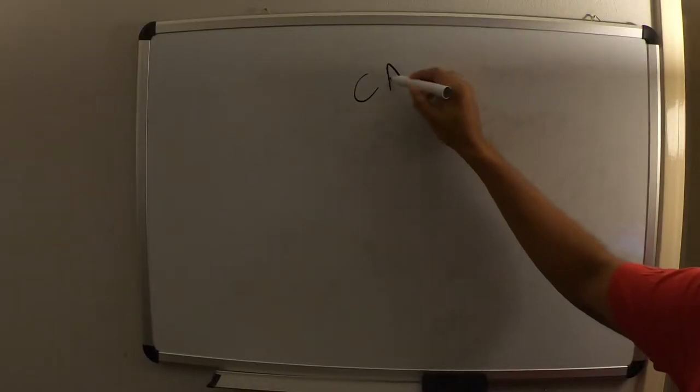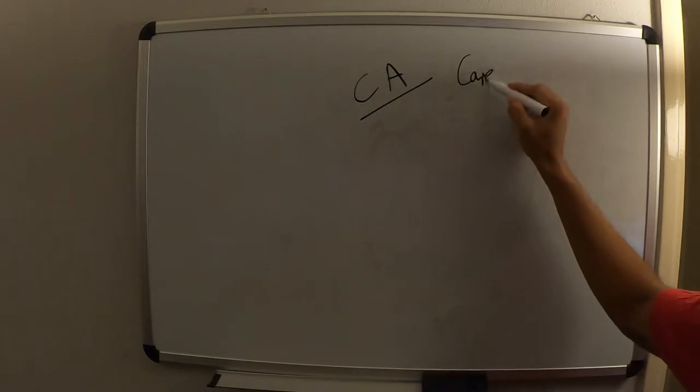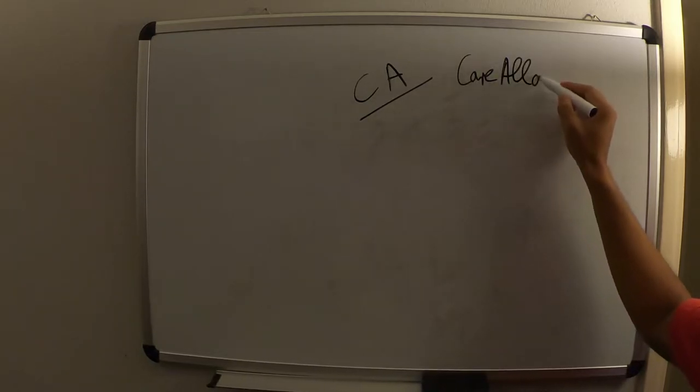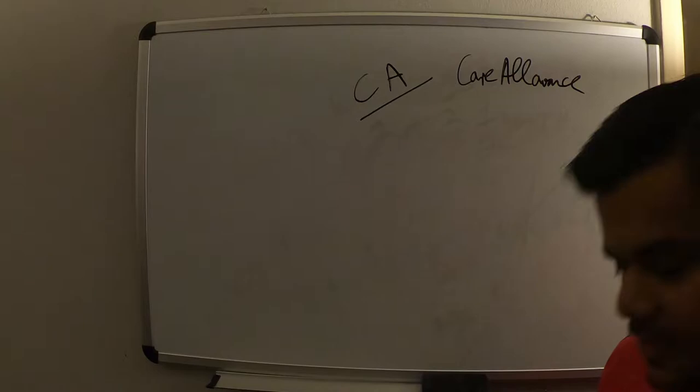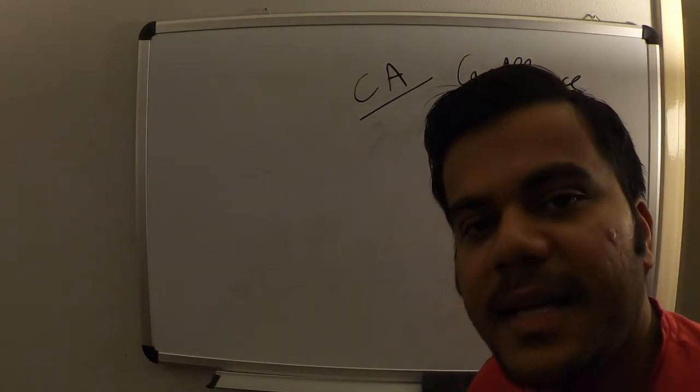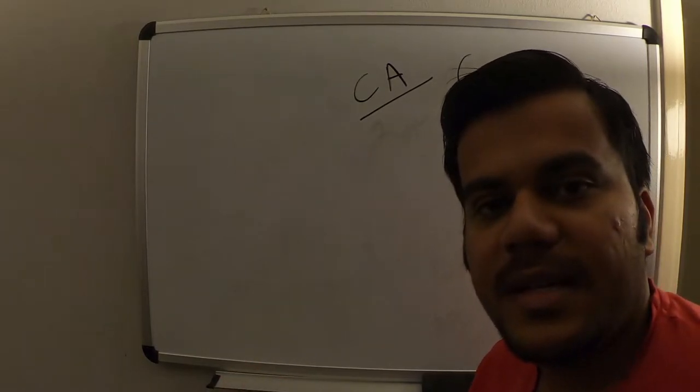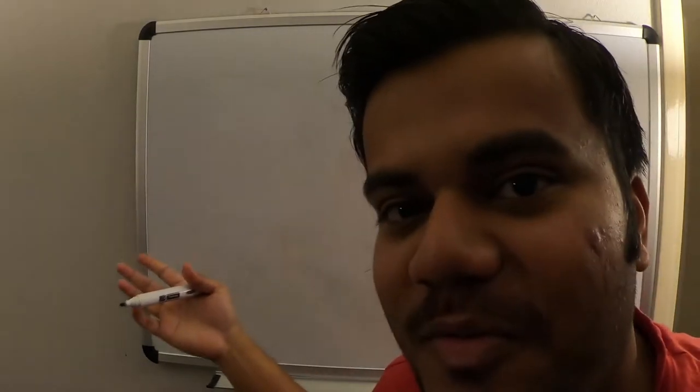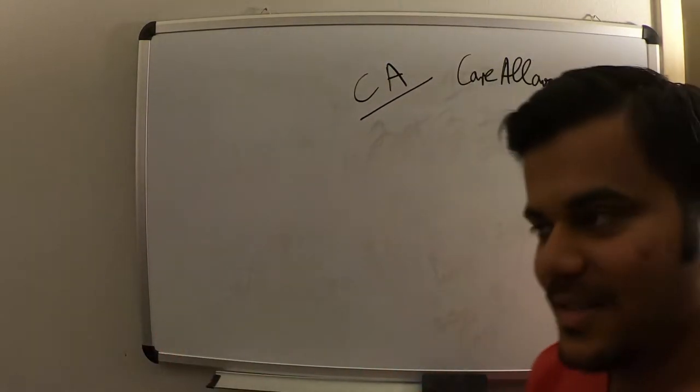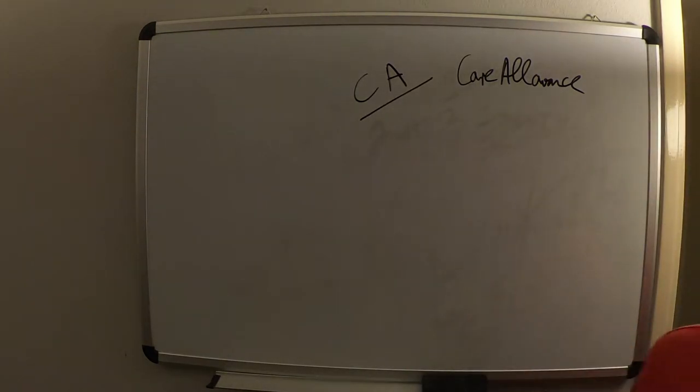Let's talk about CA, or care allowance. Mostly in your case as a student or someone coming to Netherlands, all these things are eligible for students. When a person is working and getting a gross salary of around 30,000 or 40,000 euros, you never qualify for this kind of allowance. It doesn't apply to you, it only applies to students.